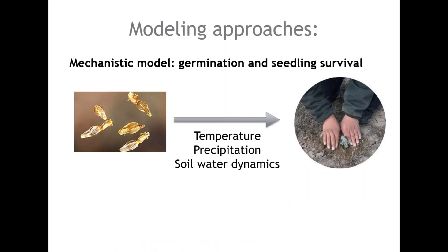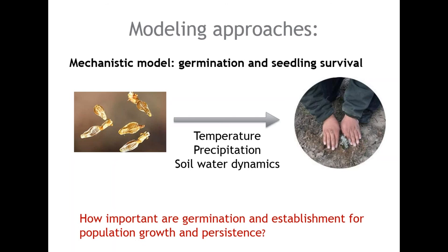Our third model is a mechanistic model, because it focuses on a particular set of biological processes rather than just statistical correlations. This model looks closely at sagebrush germination and seedling establishment. It uses daily temperature and precipitation data to estimate the probability that sagebrush seed germinates, then models both water availability through the soil profile and root growth to determine if seedlings can survive the first growing season. We generally have more confidence in mechanistic models for making predictions, because they don't require as much extrapolation of purely statistical relationships. However, this model focuses on just a couple of life history processes that may not tell the whole story about population growth and persistence.